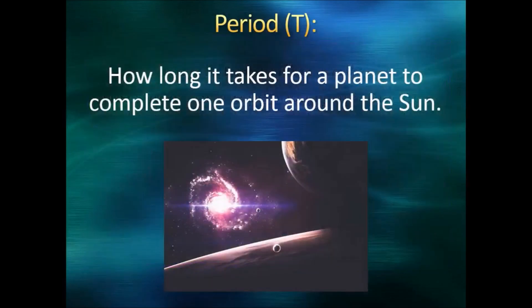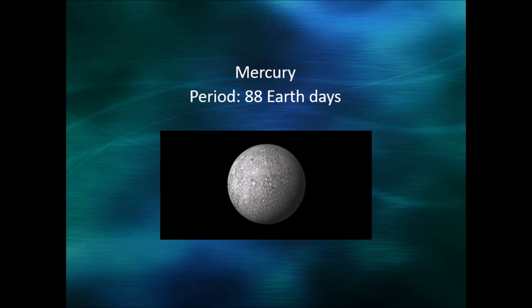Well, the square of the period is T squared. The period is how long it takes for a planet to complete one orbit around the sun. In the case of the Earth, that's 365 days. Mercury, the planet closest to the sun, has a period of 88 days.